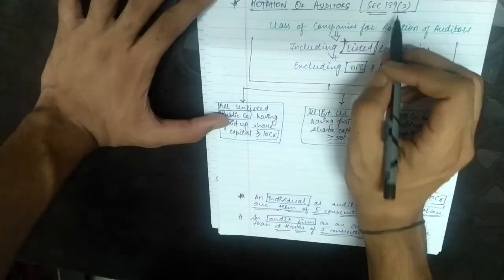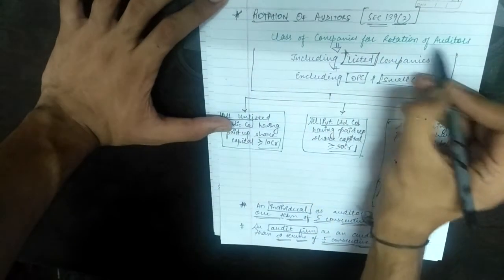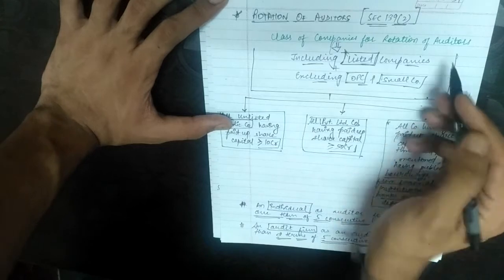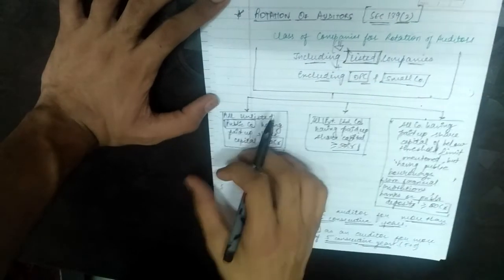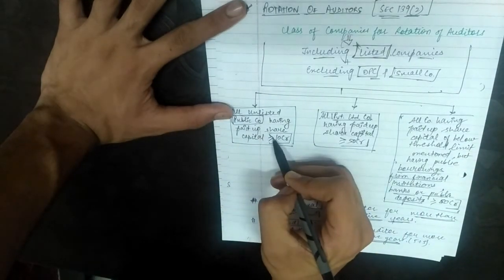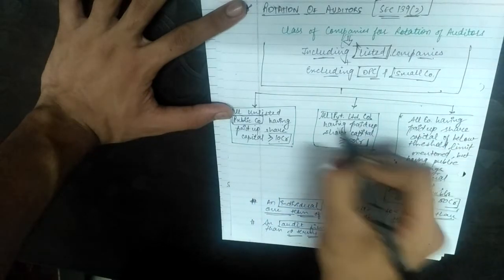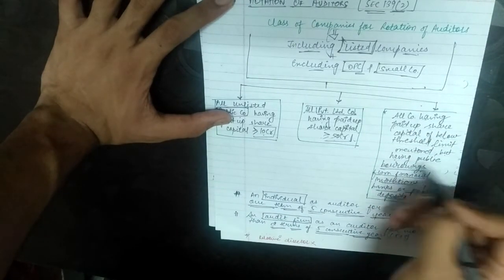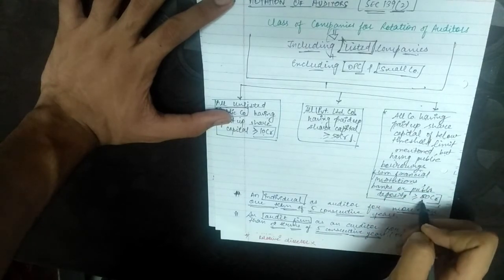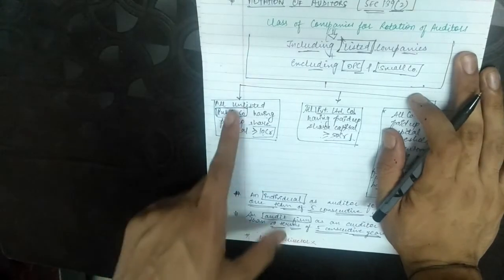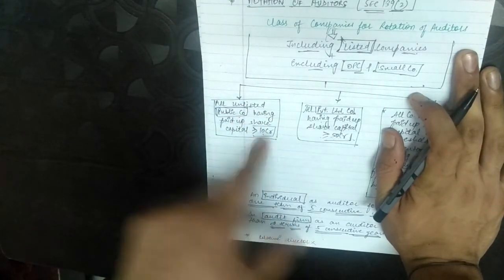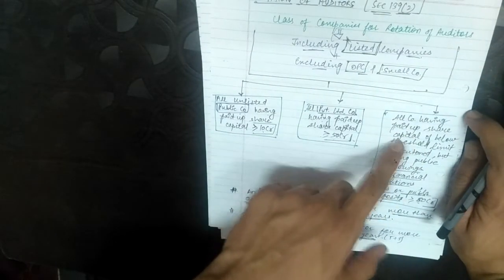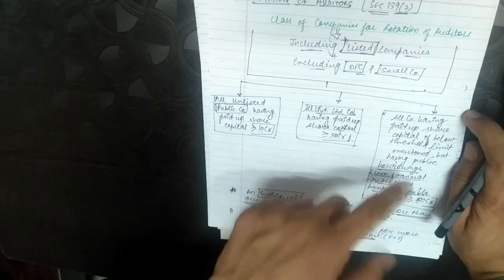Now rotation of auditors — Section 139 subsection 2. The class of companies for rotation includes: all listed companies excluding OPC and small companies; all unlisted public companies having paid-up share capital greater than or equal to 10 crore; all private limited companies having paid-up share capital greater than or equal to 50 crore; and all companies having paid-up share capital below the threshold but having public borrowings from financial institutions, banks, or public deposits greater than or equal to 50 crore.